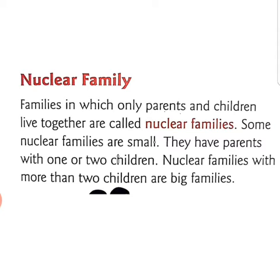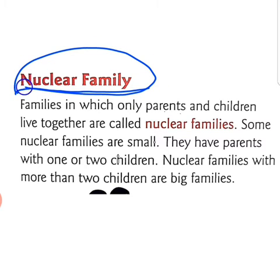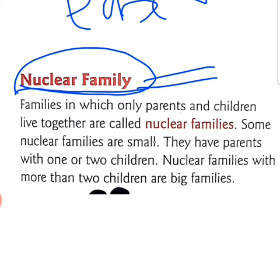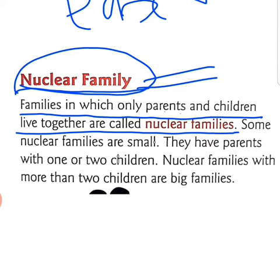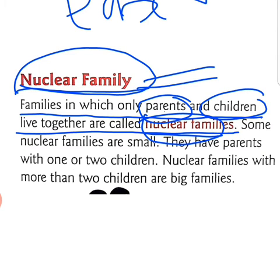The first type we are learning about is nuclear family. Nuclear family means ekal parivaar. What is the definition of nuclear family? Families in which only parents and children live together are called nuclear families — aisai parivaar jis mein sirf maata, pita aur bachche rahate hain, unko hum nuclear family bolte hain, ekal parivaar kehte hain.